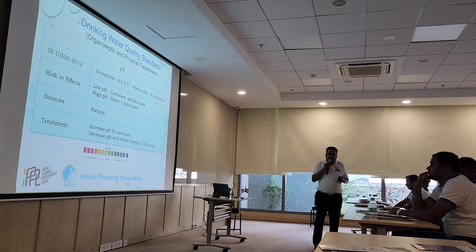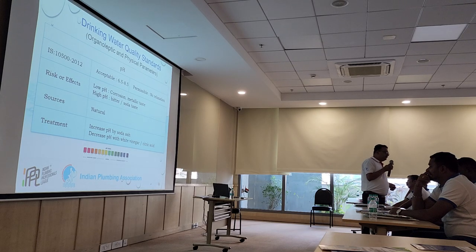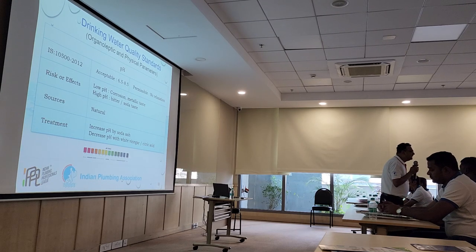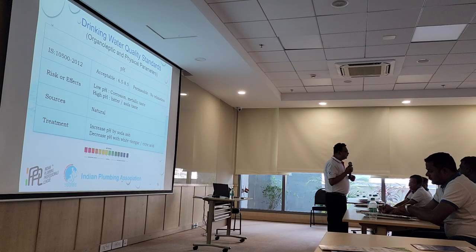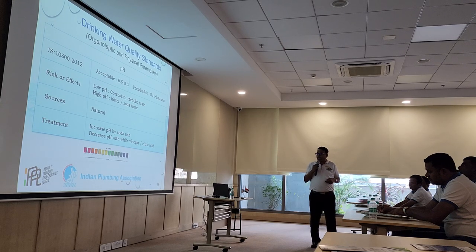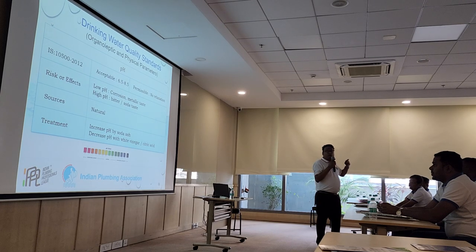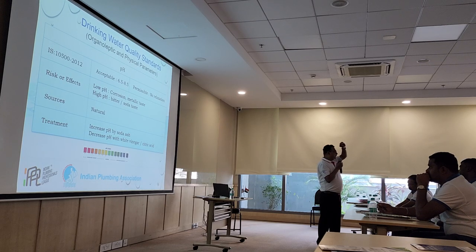pH: if pH is less than 6.5, it is acidic. We should not be taking acidic or alkaline water — it has to be neutral. The treatment is: if water is acidic, add some alkaline agent; if water is alkaline, add some acid to neutralise it.